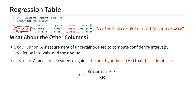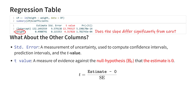For the intercept, this is rarely an interesting test, unless you specifically want to know whether the intercept differs from zero, so most of the time you can safely ignore this. But for the slope, differing from zero means that there is a slope, and therefore a correlation between these variables. So this is actually useful information. In this case, the slope has a t-value of 4.3.